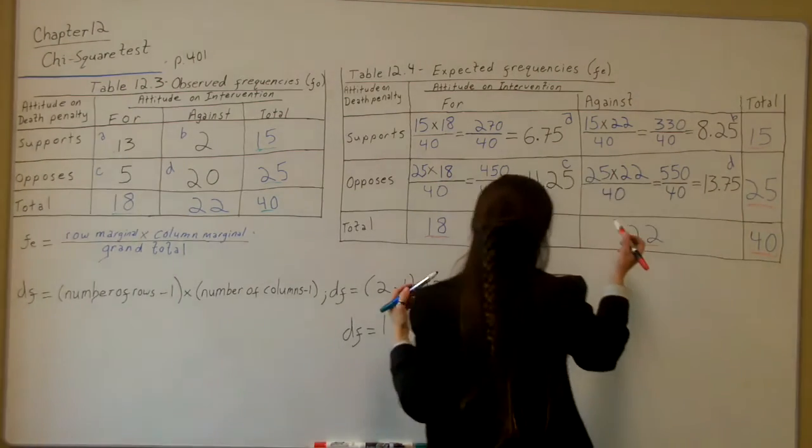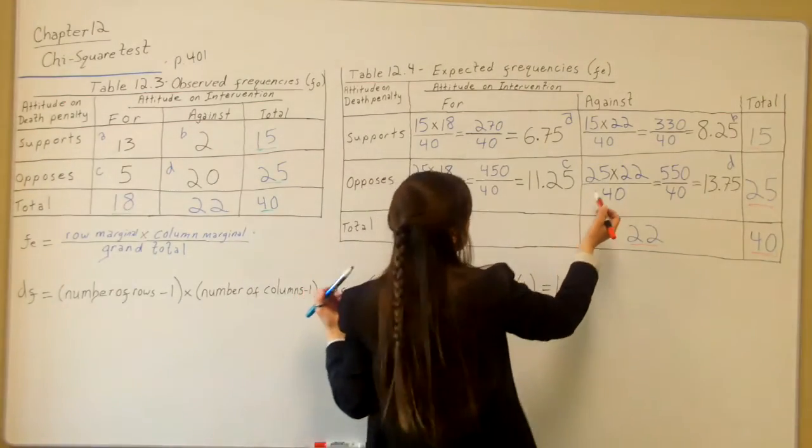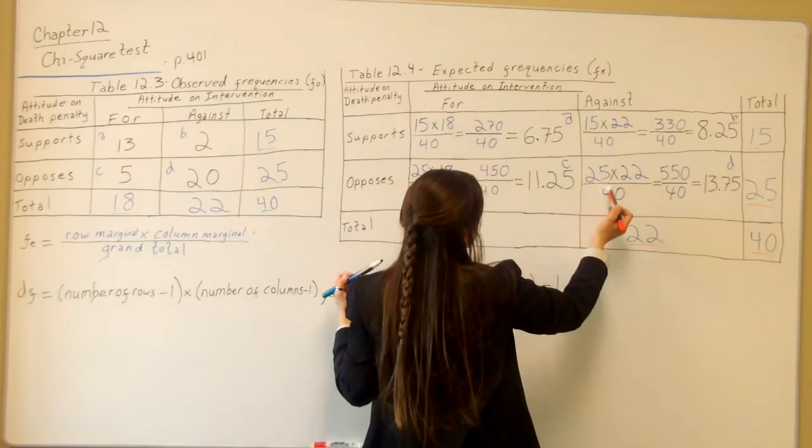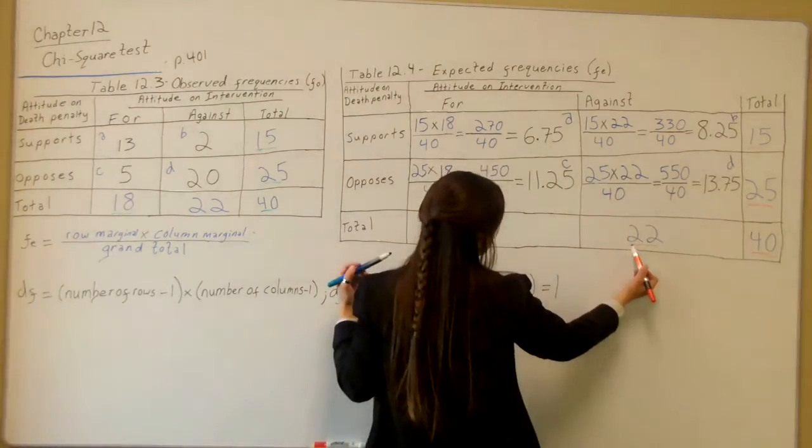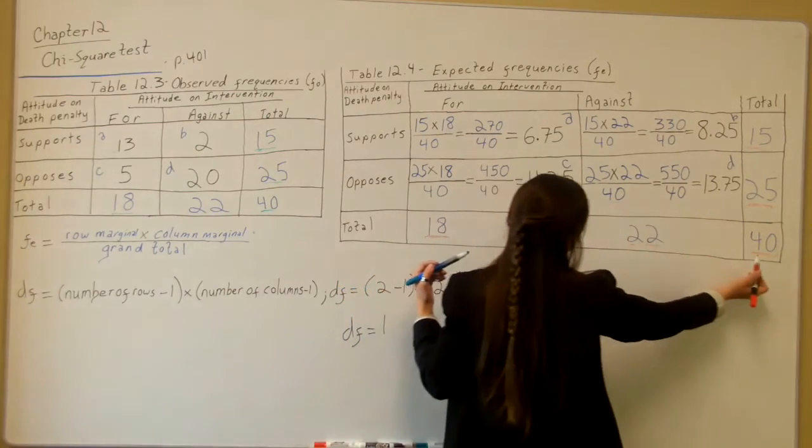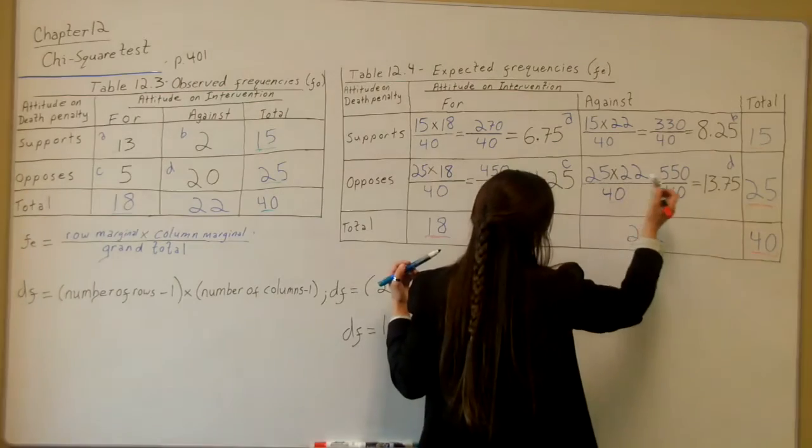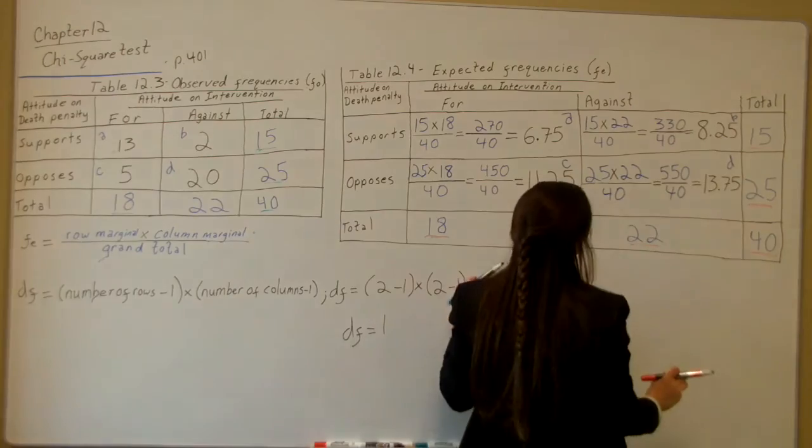We have one more block to fill in, and then we'll be done with calculating our expected frequencies. This one we have 25, which is your row marginal, times 22, which is your column marginal, over your grand total, which is 40. So 25 times 22 equals 550 divided by 40 equals 13.75.